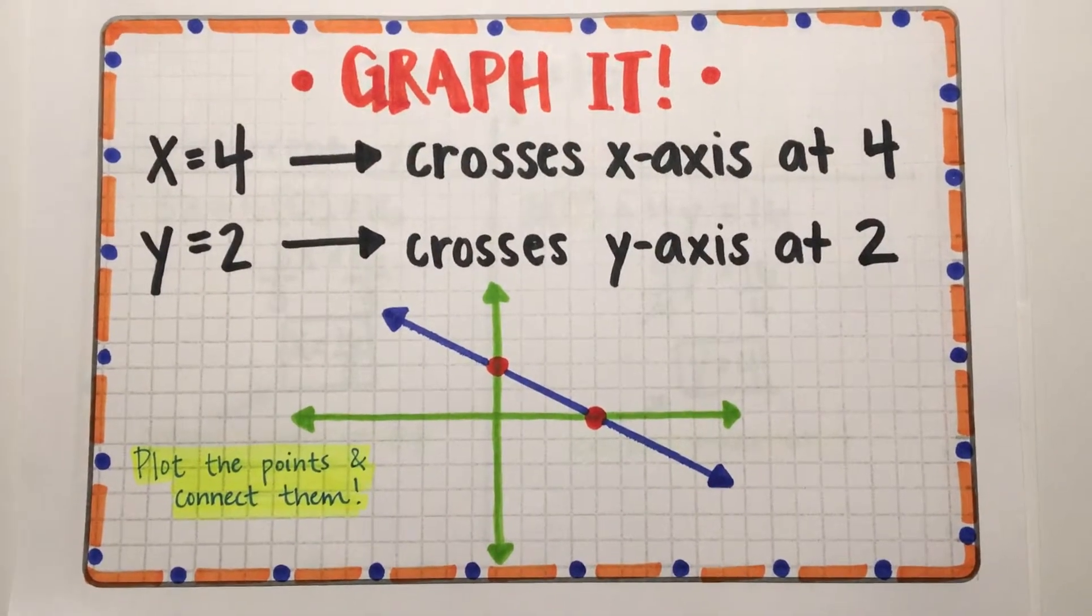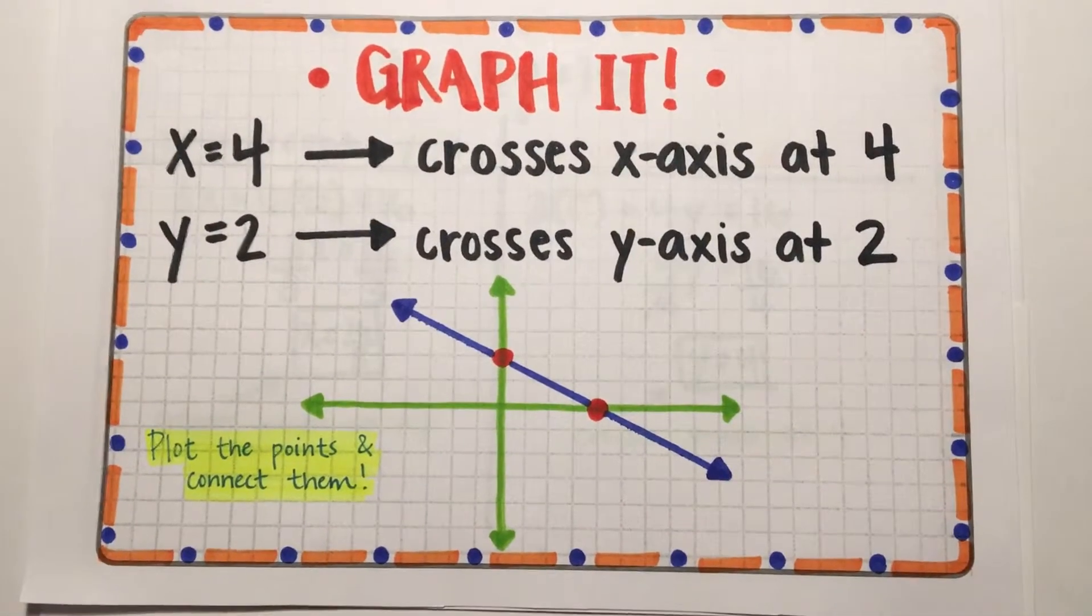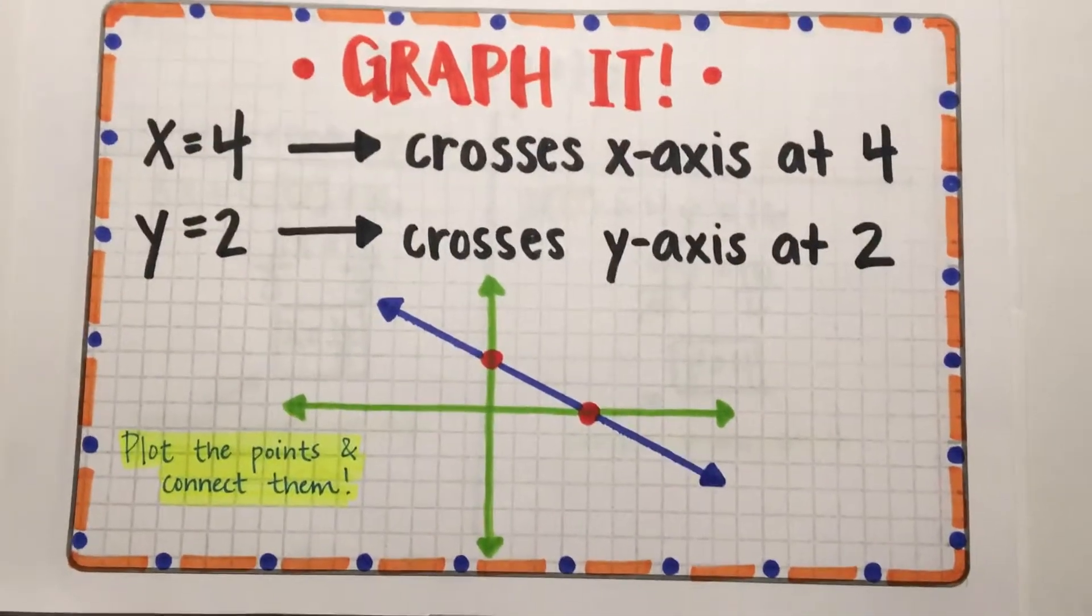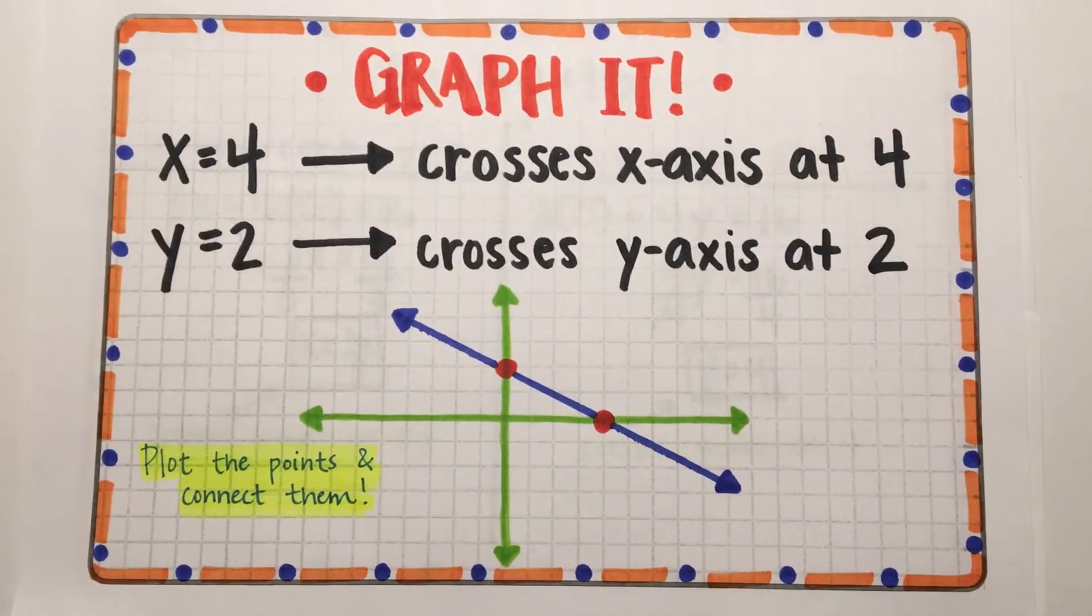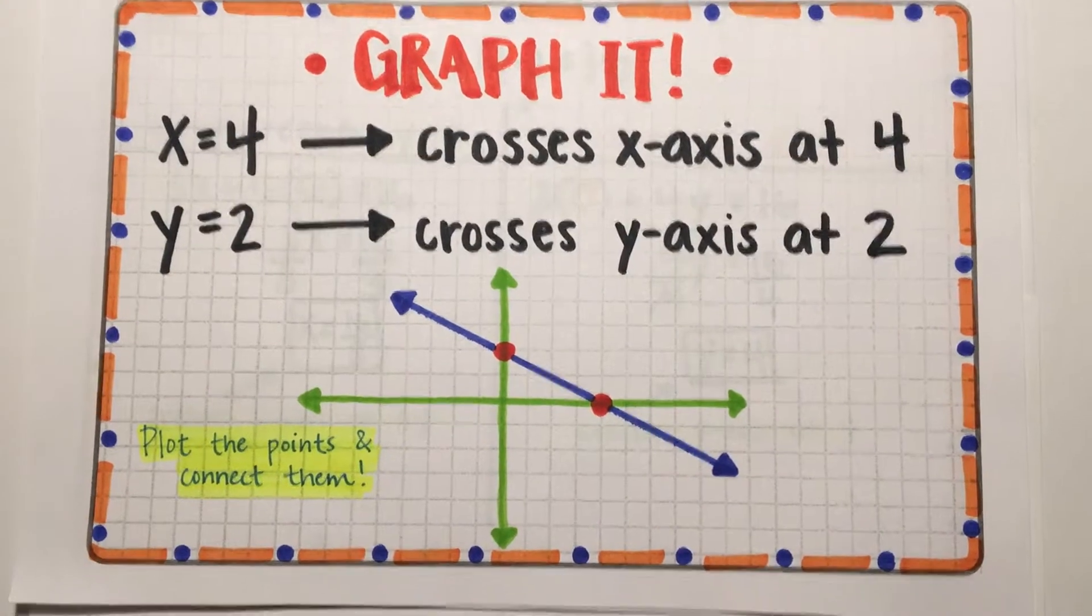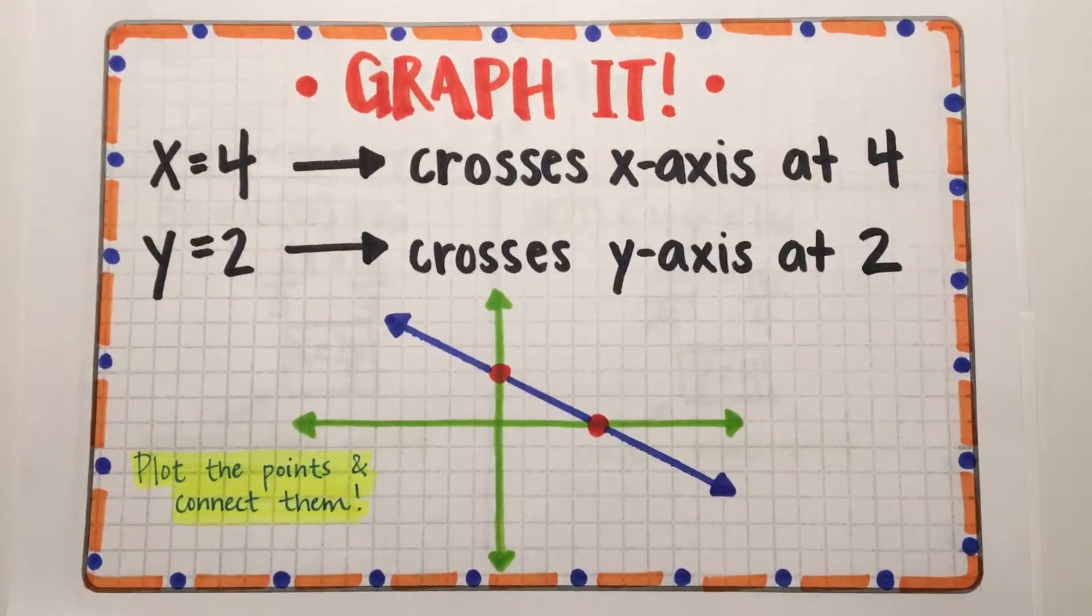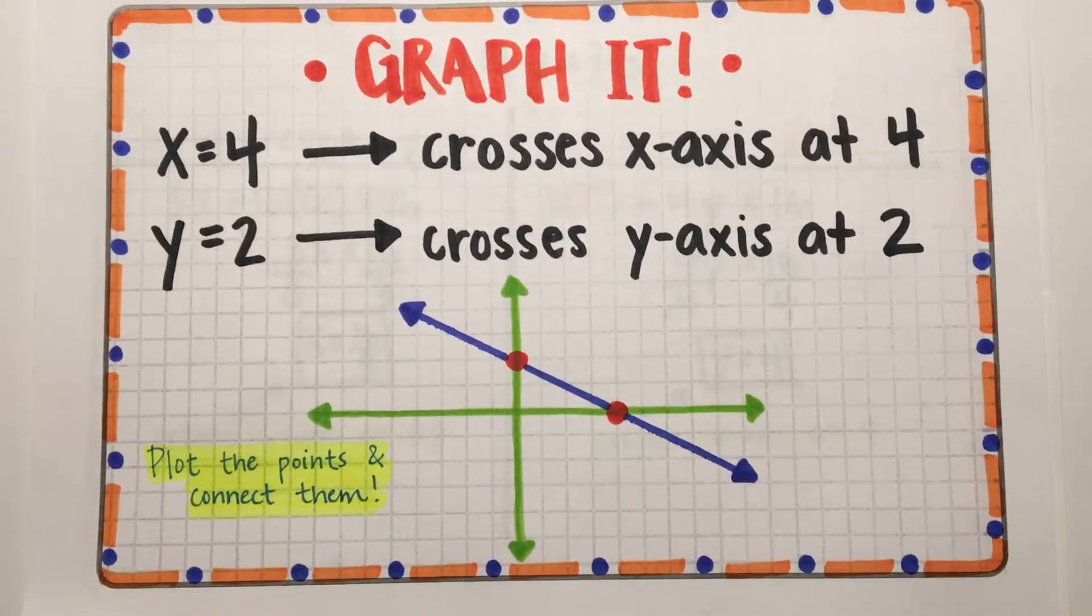If your answers are x equals 4 and y equals 2, then the graph crosses the x-axis at 4, plot that point, and the graph crosses the y-axis at 2, plot that point too. Don't let your teachers play with you. You only need two points to graph a linear equation. Connect the points, get an A in algebra, and life is good. You ready for a trickier one?